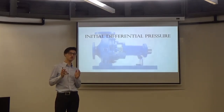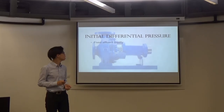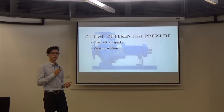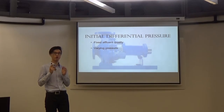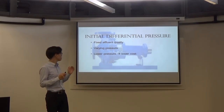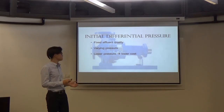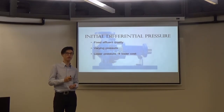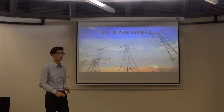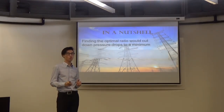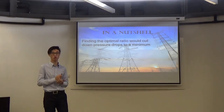Next, initial differential pressure would be our second criterion. Fixing the effluent quality, we would vary the pressure so as to attain the required standards. The aim is to lower the pressure needed initially, which would translate into lower costs. In a nutshell, finding the optimal ratio would result in minimizing pressure drops.